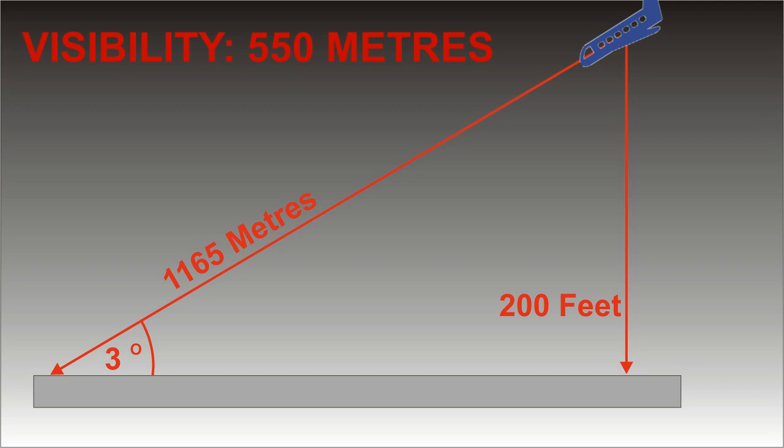However, the distance seen out of the cockpit window is 1,165 meters. This is still over 550 meters, which runs the risk of the pilot not seeing the runway lights. If the pilot cannot see the lights, then he has to discontinue the approach and go around.